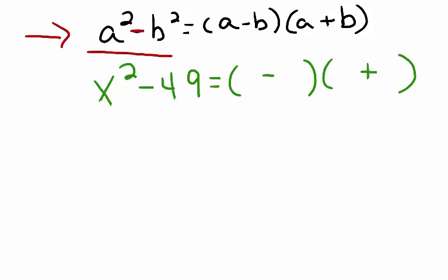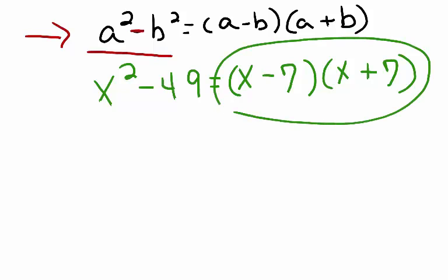The square root of x squared is x, so that goes here and here. The square root of 49 is 7, so I plug that in here. Now we have completely factored the expression using the difference of two squares formula.